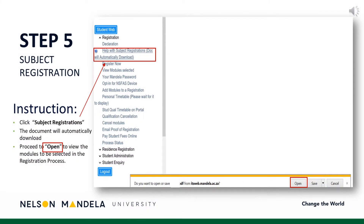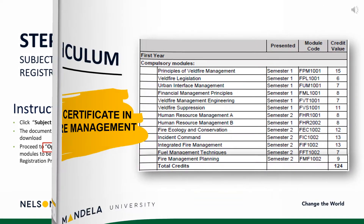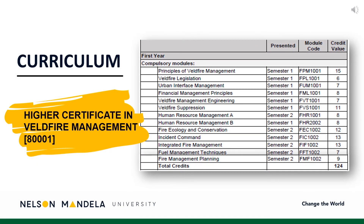Step 5: Subject Registration. Download the curriculum qualification document containing the modules for annual completion. On screen is a duplicate of the information reflected in your PDF download. All modules to be selected for first year are indicated on screen.